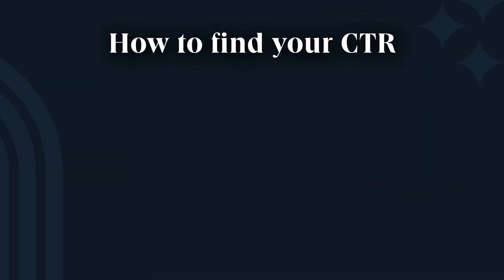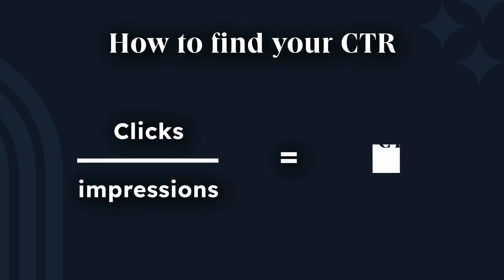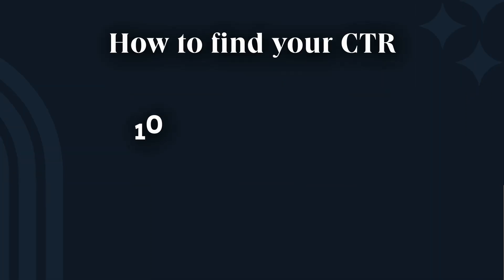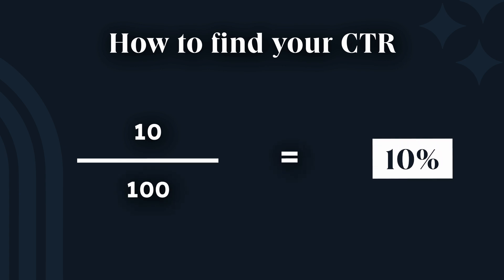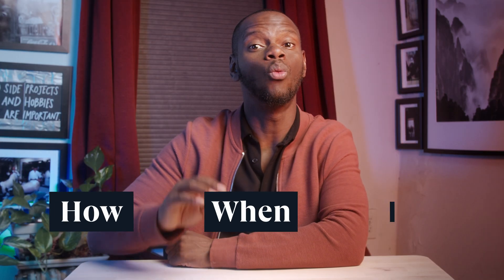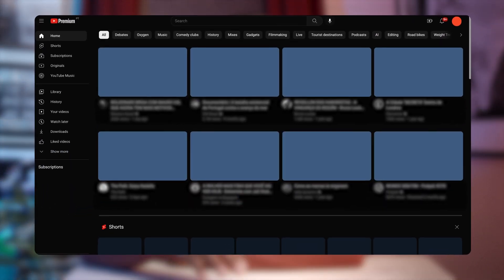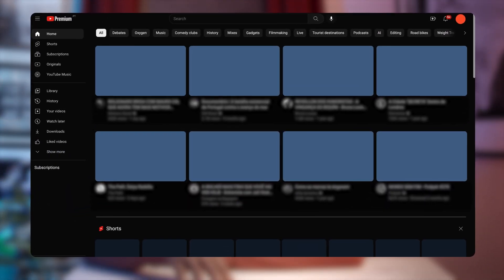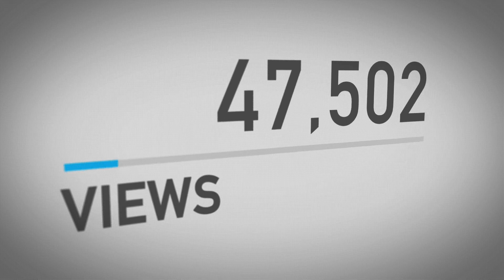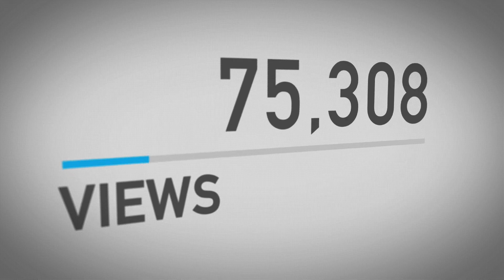To find CTR, YouTube divides the number of clicks you get by the number of impressions. So say you got 10 clicks across 100 impressions — your CTR would be 10%. How, when, and where your videos appear on a recommendation list is all down to YouTube's algorithm. This is super important because before you can even contemplate amping up your views, you need to entice people in.